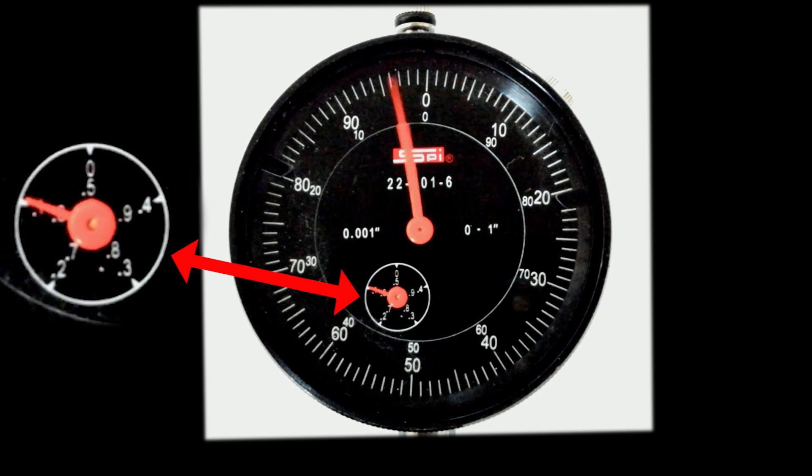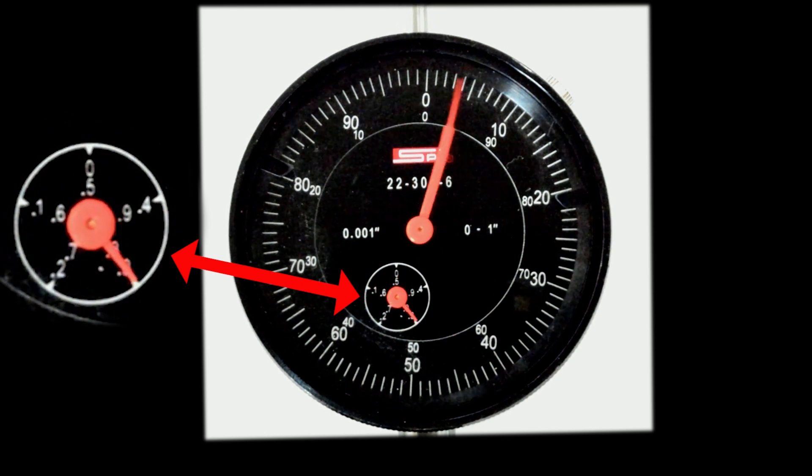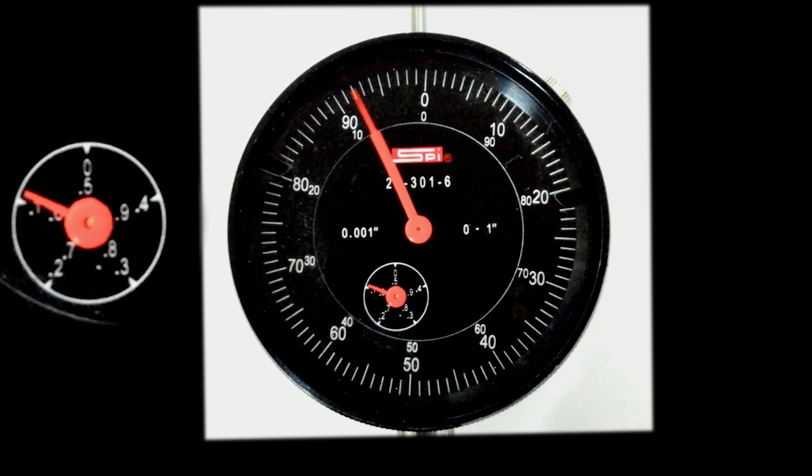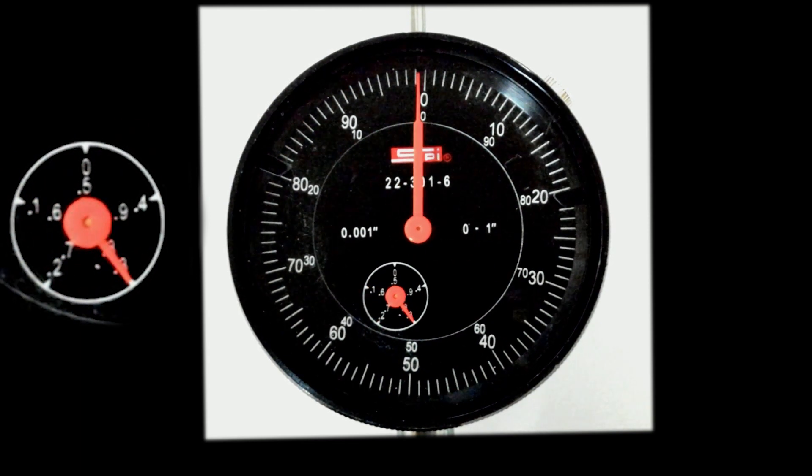To keep track of the numbers of rotation, a revolution counter is used. This counter rotates counter-clockwise twice for one inch of movement.